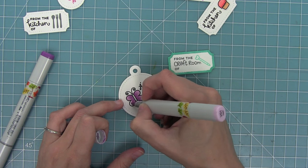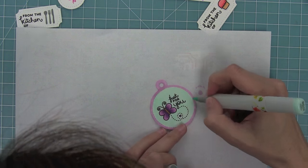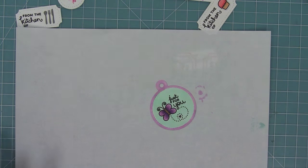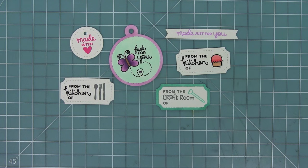So you can see I've stamped this adorable butterfly image, and I'm going to go ahead and color in the whole thing with my markers, and I think it's a really fun look and really fun way to use your markers and kind of jazz something up.